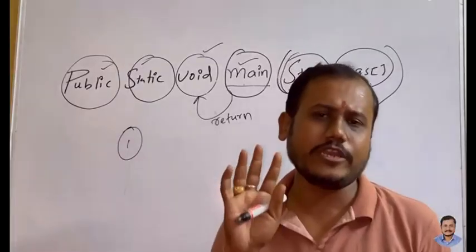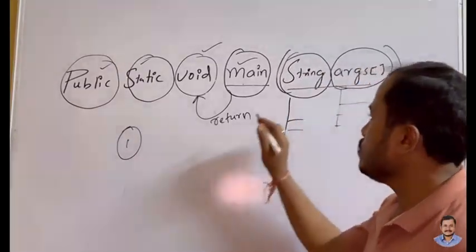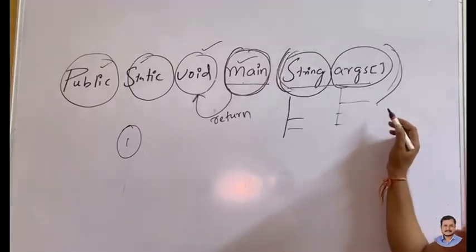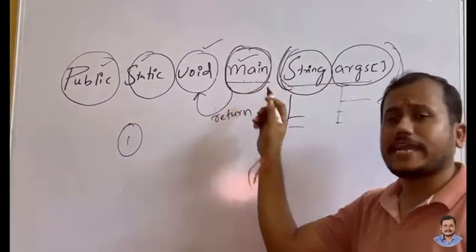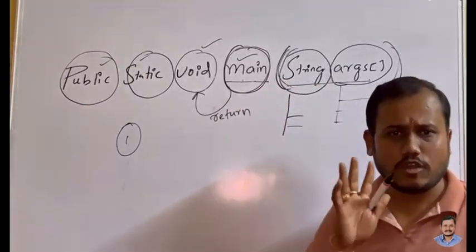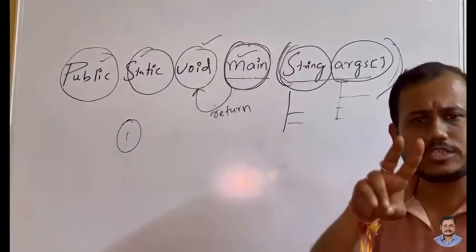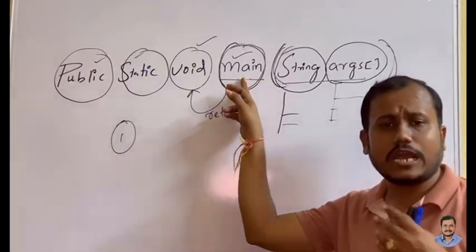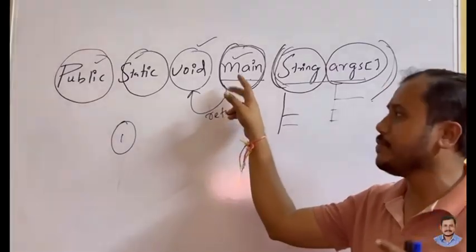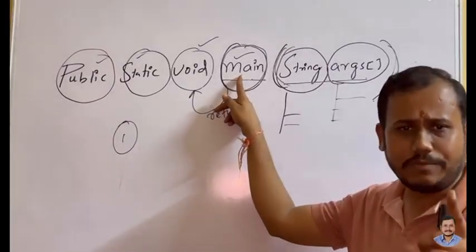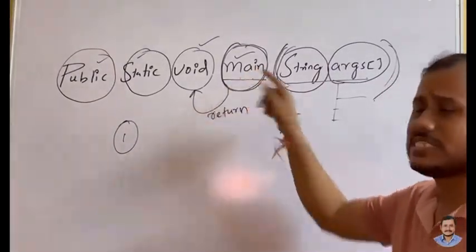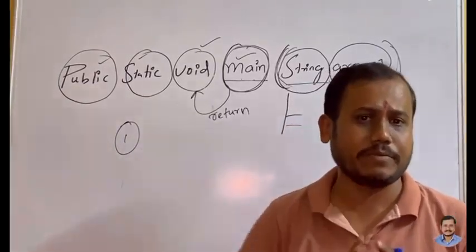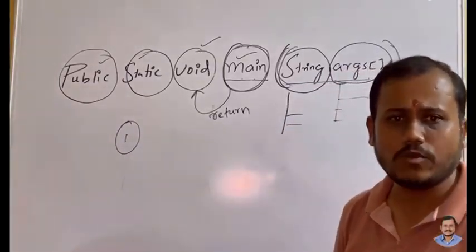Now, main is also a method in Java — it is a predefined method. So in order to access the main method, you also need to create an object. Applying rule one: program execution starts from the main method, meaning without creating the object I am executing the main method — so I am violating rule two.